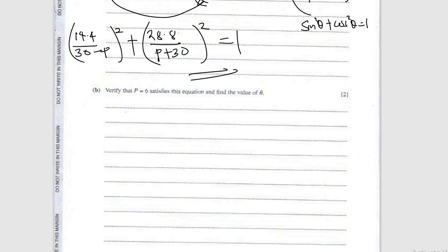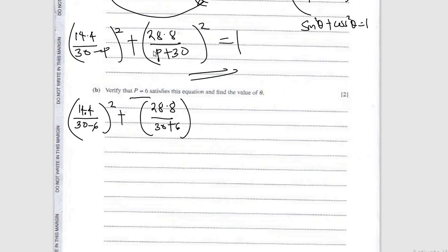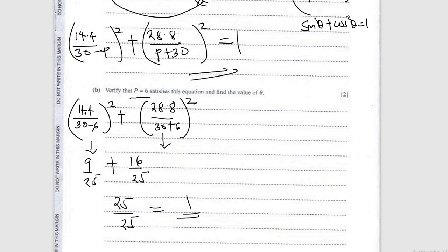Next: verify that P = 6 satisfies this equation. Substituting P = 6: (14.4/24)² + (28.8/36)² = (9/25) + (16/25) = 25/25 = 1. Yes, we've verified it gives 1, so we're correct.